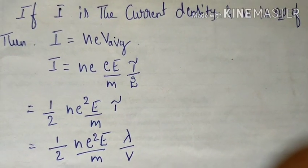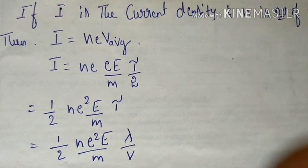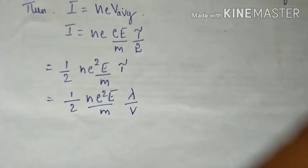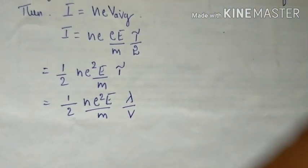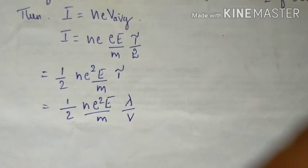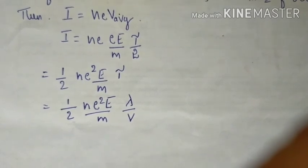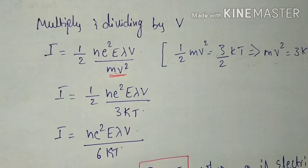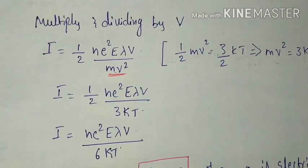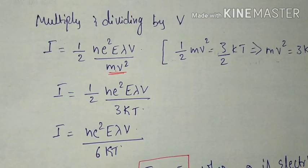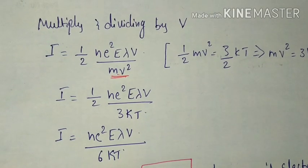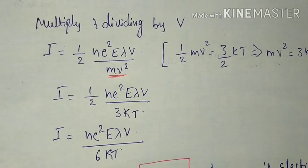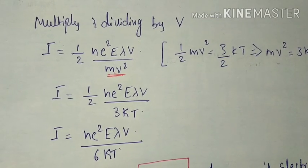Since tau = lambda/v, substituting this value gives i = (n·e²·E/m)·(lambda/v). Multiplying and dividing by v, the expression becomes i = (1/2)·n·e²·E·lambda·v / (m·v²).